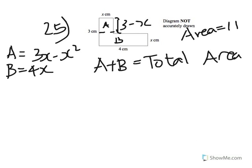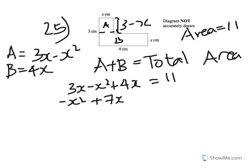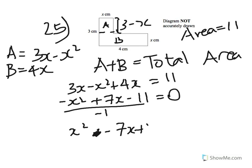The total area is 11, A is 3x minus x squared, and B is 4x. So 3x minus x squared plus 4x equals 11. Rearranging, we get negative x squared plus 7x minus 11 equals 0. We want x squared to be positive, so we divide everything by negative 1, giving us x squared minus 7x plus 11 equals 0.